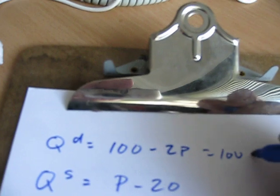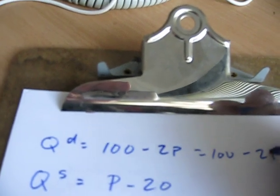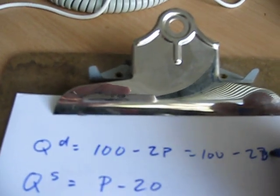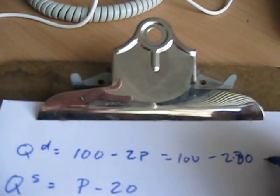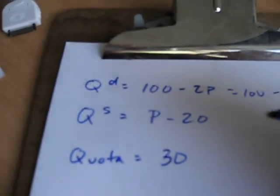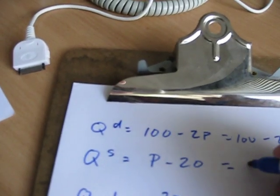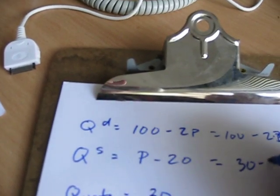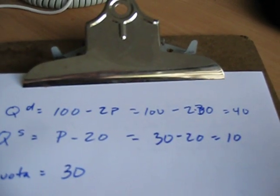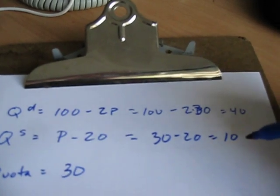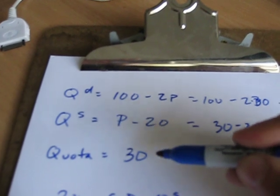What's quantity consumed going to be? Plug that 30 back up into the demand curve: 100 minus 2p. Well, p is 30, so 100 minus 2 times 30 is 100 minus 60, or 40. Plug your price into your supply curve — 30 minus 20 is equal to 10. That's quantity supplied. And indeed, the gap of 40 minus 10 is equal to the quota of 30.